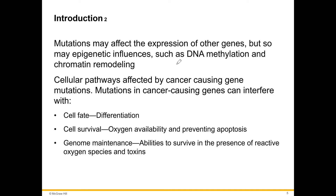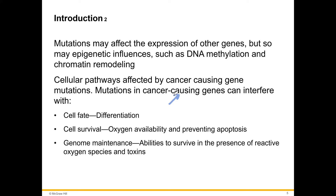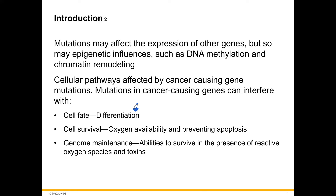Cellular pathways affected by cancer-causing gene mutations: mutations in cancer-causing genes can interfere with cell fate, cell survival, and genome maintenance. If we have mutations in these genes, that might affect differentiation of stem cells. Usually, when stem cells differentiate into mature cells such as fibroblasts, muscle cells, or nerve cells, they either do not divide or divide only a limited number of times.